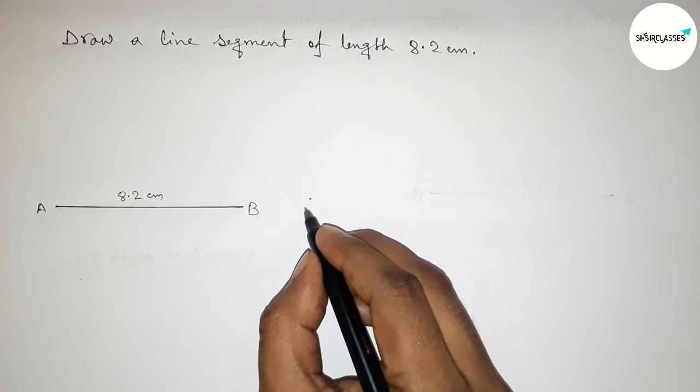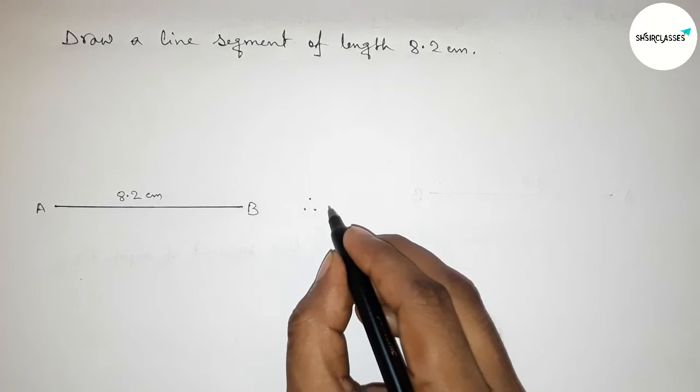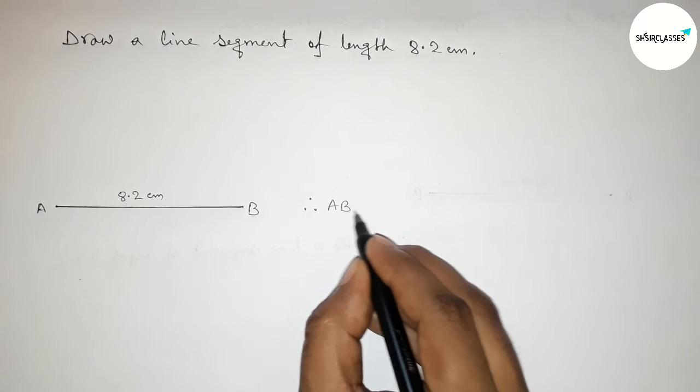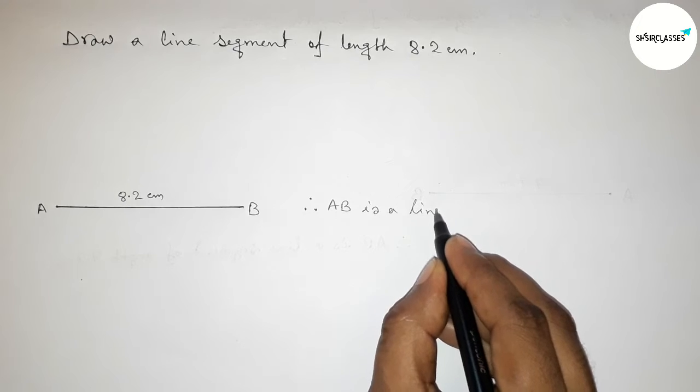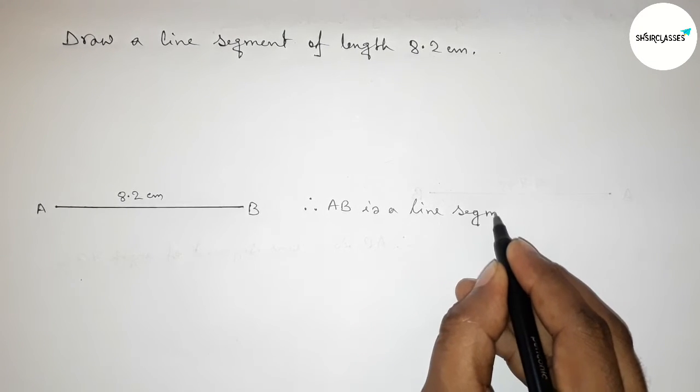So therefore now we can say that AB is a line segment of length 8.2 centimeters and by the help of scale you can draw this line by this way.